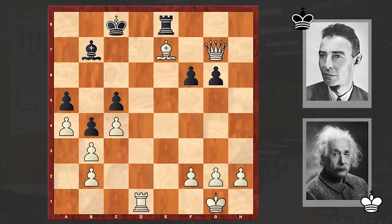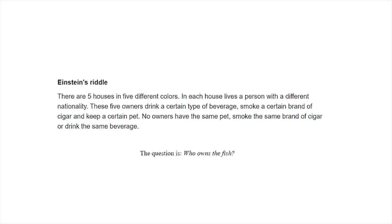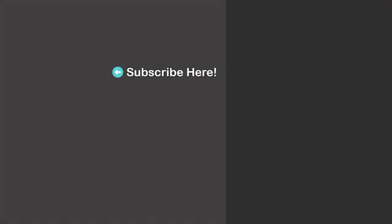And finally, the father of the atomic bomb resigned. This is how the game of two great physicists ended. Let's also solve a riddle — known as Einstein's riddle. According to Einstein, 98% of the world cannot solve it. Leave your answer in the comment section. Thanks for watching — see you in the next video, take care!